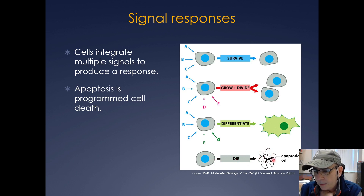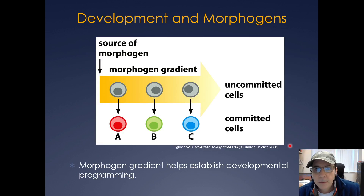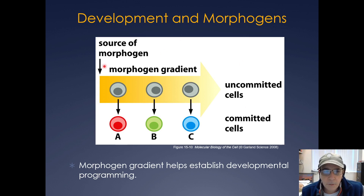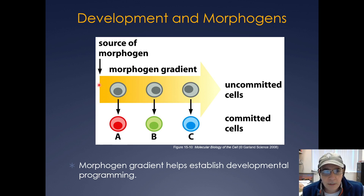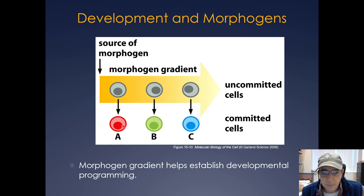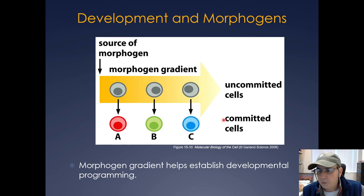Here you can see an apoptotic cell. During development, a lot of morphogens are secreted, and the morphogen gradient can actually tell the cell what it should differentiate into. If you have a source of a morphogen and a morphogen gradient, different cells — depending on the concentration of morphogen — will either become an A cell, a B cell, or a C cell. Once they get a specific concentration of the morphogen, they will actually divide and differentiate into a specific cell type.